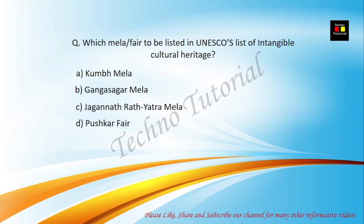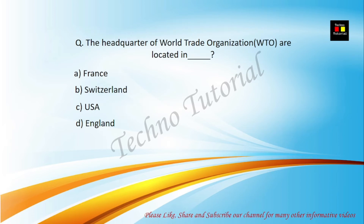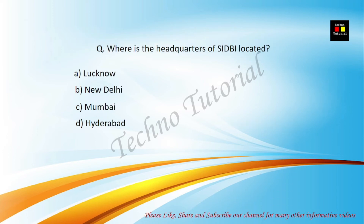Which Mela or fair has been listed in UNESCO's list of Intangible Cultural Heritage? Options are Kumbh Mela, Gangasagar Mela, Jagannath Rath Yatra, and Pushkar Fair. The correct answer is Kumbh Mela. The headquarters of World Trade Organization (WTO) are located in Switzerland.